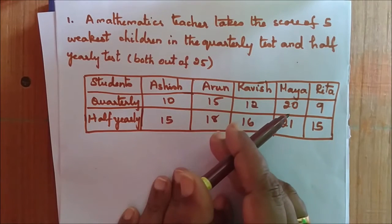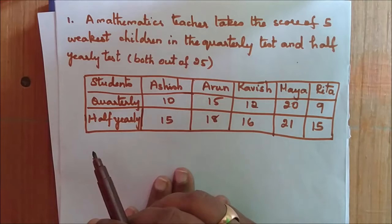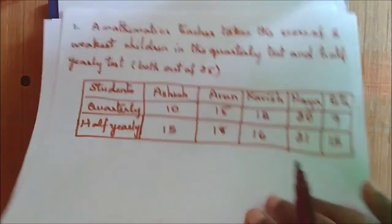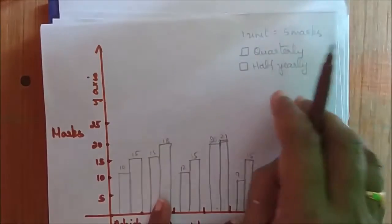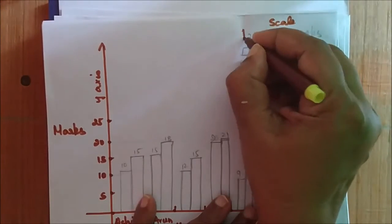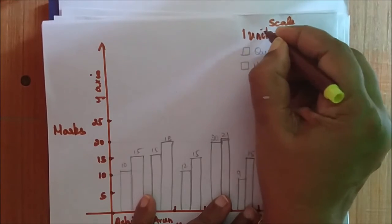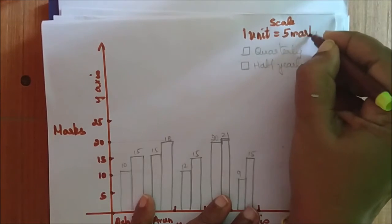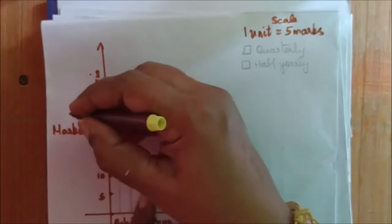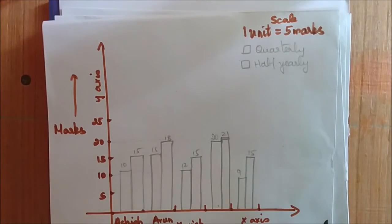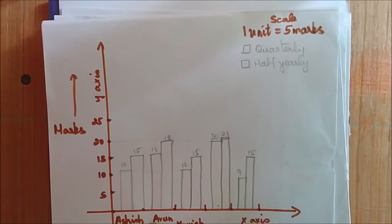For that my maximum value is 21. So I can have the marks on my y-axis and I can have it as a unit of 1 unit is equals to 5 marks. So what will be my scale? Scale is very important students, so please don't forget to write the scale. 1 unit is equals to 5 marks. And I mark the marks on my y-axis and the name of the students on the x-axis.